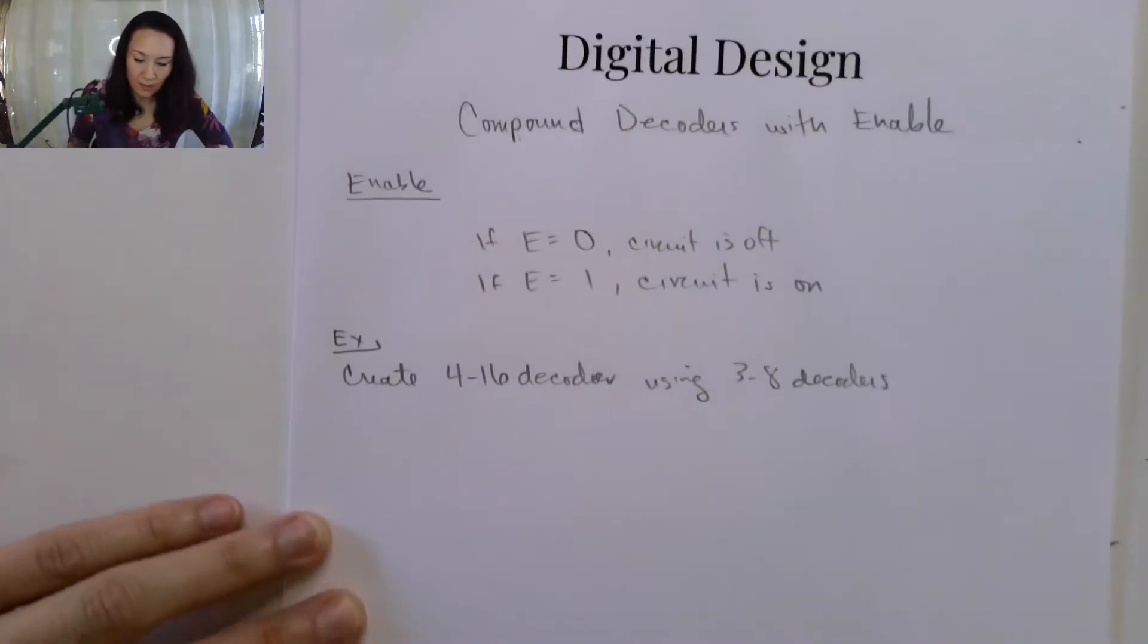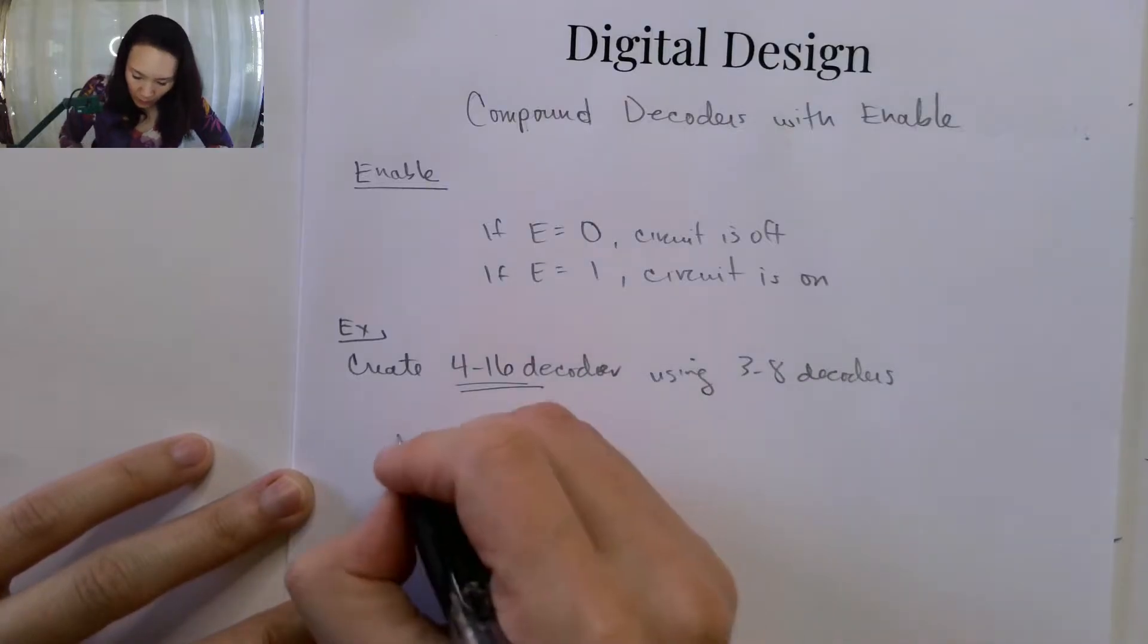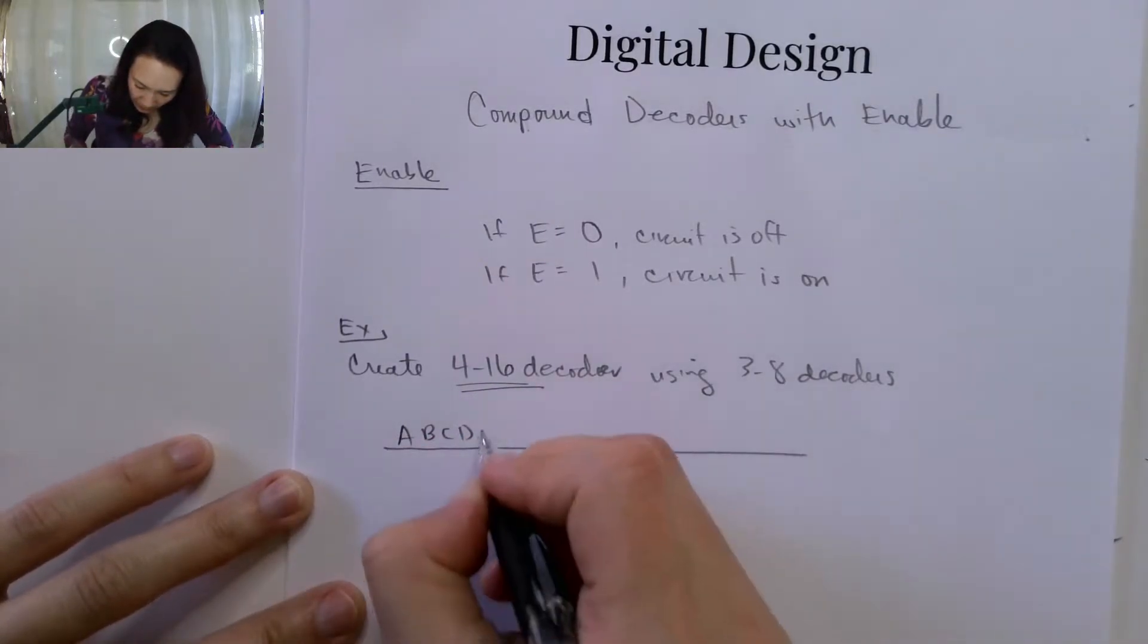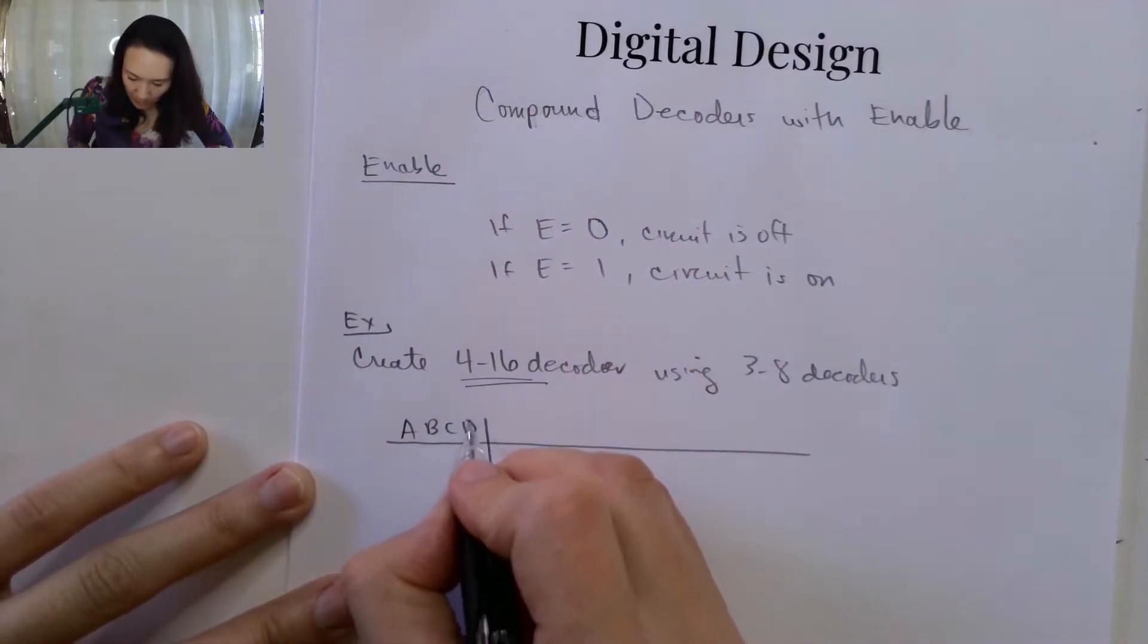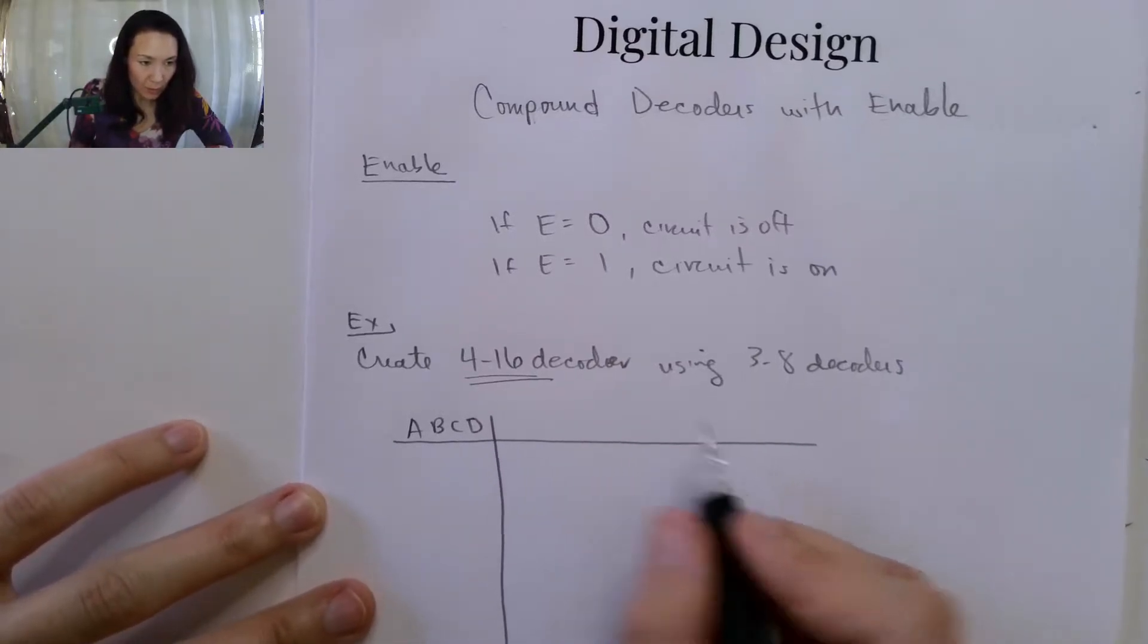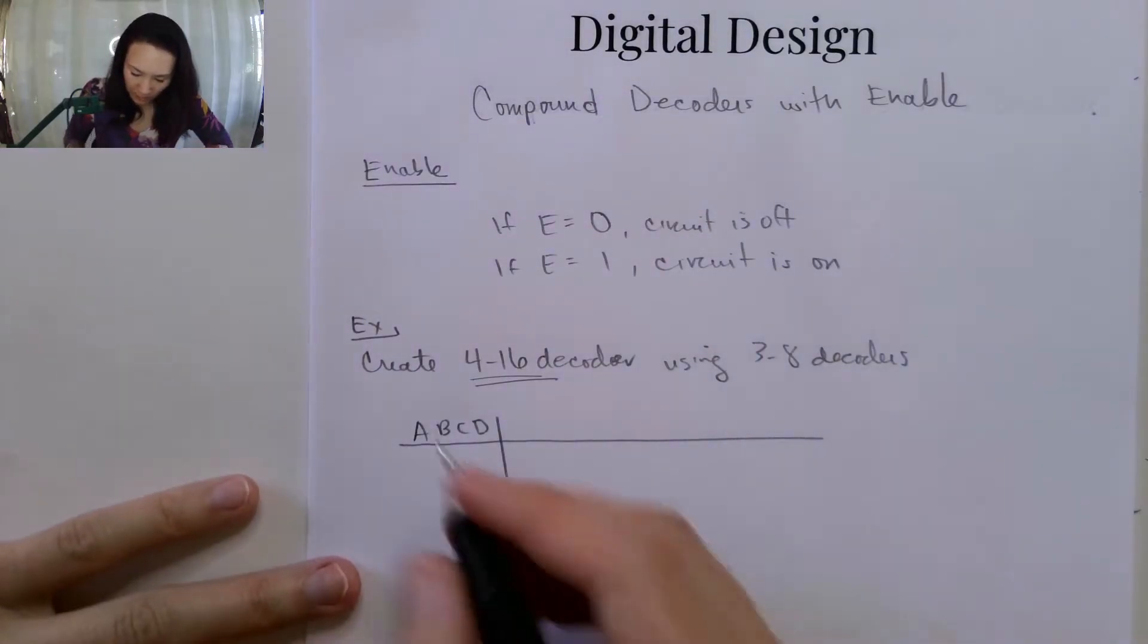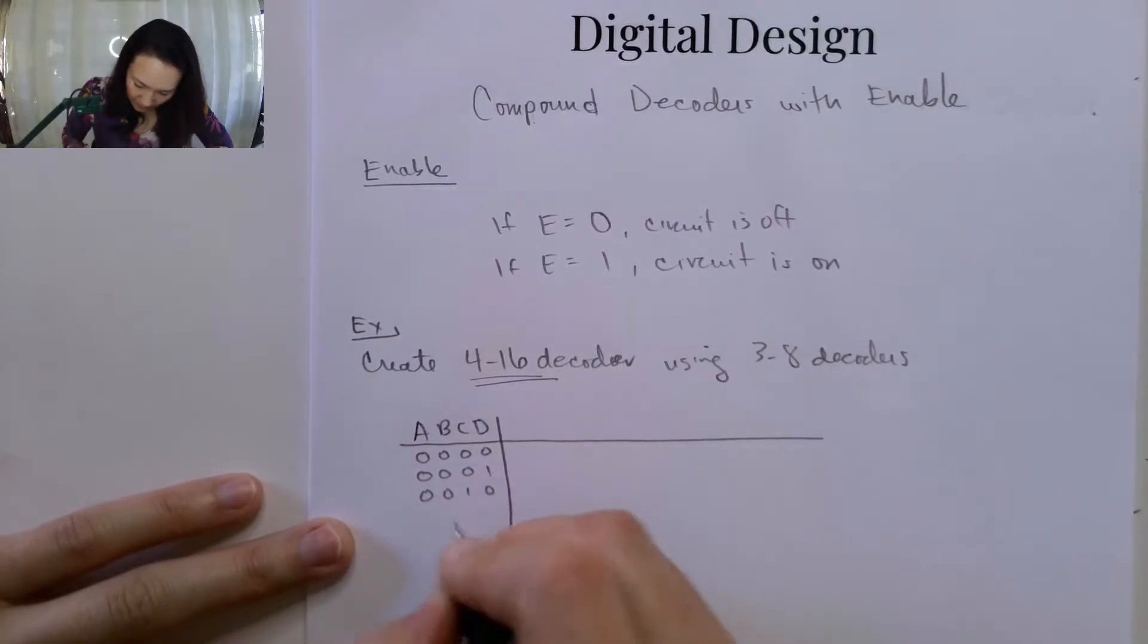If we think about this functionality, what we want to do is have a circuit that takes in four inputs. This is going to be our binary input, and we want to output the decimal equivalent of this, doing a binary to decimal conversion. Since we have four bits, I can construct this truth table just by counting in binary.